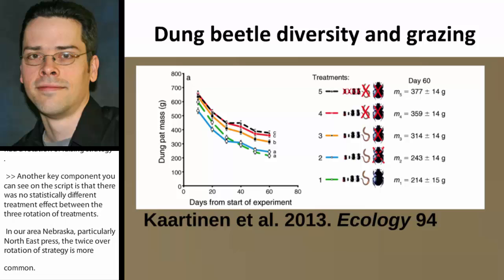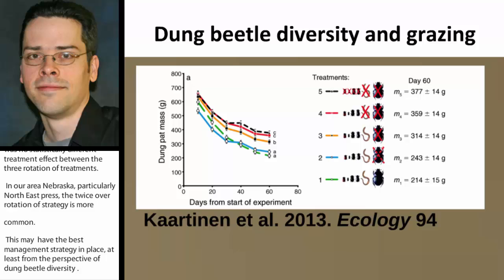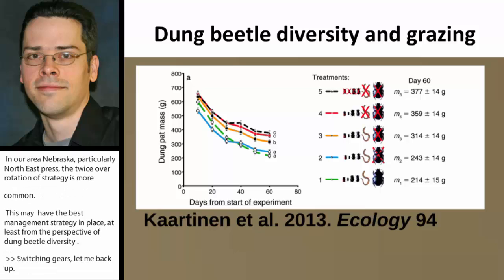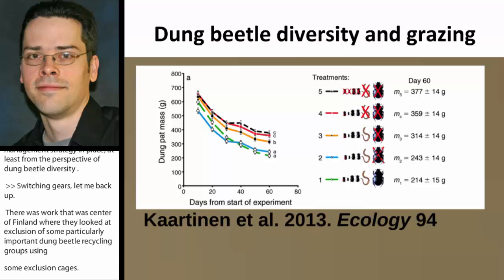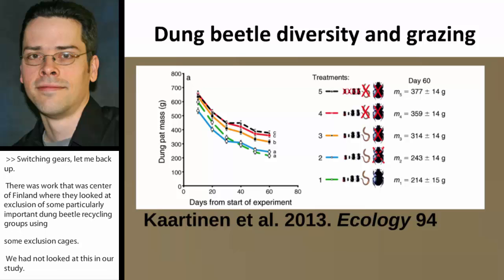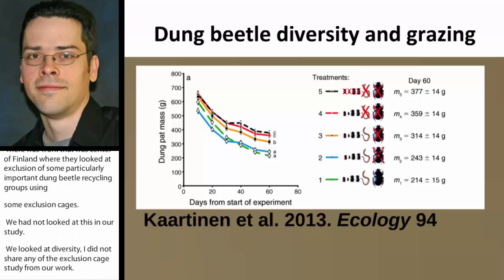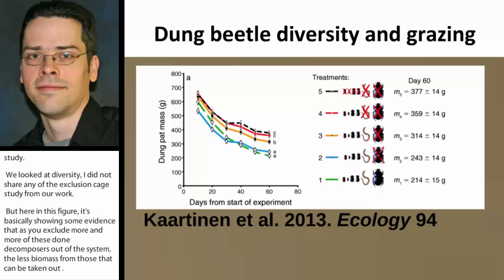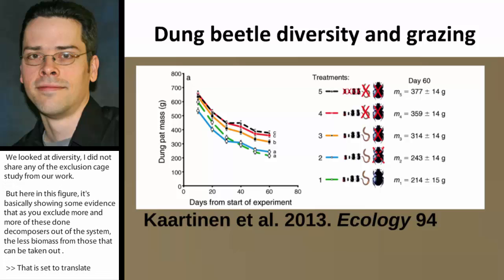There was work conducted throughout Finland where researchers used exclusion cages to study particularly important dung beetle recycling groups — something we had not examined in our study. The results show evidence that as you exclude more and more dung decomposers from the system, less biomass from the pat is removed. The more biomass removed, the higher the potential for degrading those pats and moving manure into the soil and back into the nutrient cycle.